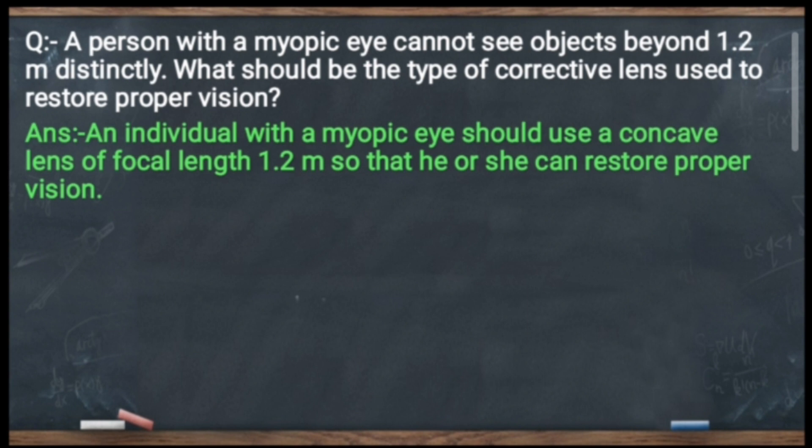Ab, myopic eye kya hota hai? Eyes may defect — myopic eye, hypermetropic eye, presbyopia — these are the defects jis ki wajah se hame door ka ya paas ka nahi dikhai deta. To myopic eye mein, woh person 1.2 meter ke baad kisi bhi object ko nahi dekh paata.